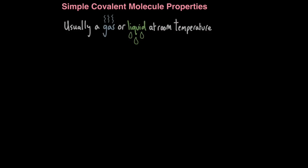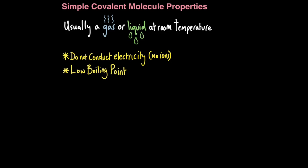Simple covalent molecules have a definite finite shape — they don't sprawl on forever like ionic compounds. Because of their structure, they have unique properties. Simple covalent molecules are usually a gas or a liquid at room temperature, though some soft solids can also be simple covalent molecules. Because they involve the bonding of atoms and not ions, they do not have charged particles and therefore cannot conduct electricity. With low boiling points, there's a lot to say about this.